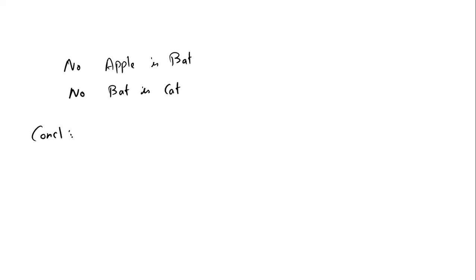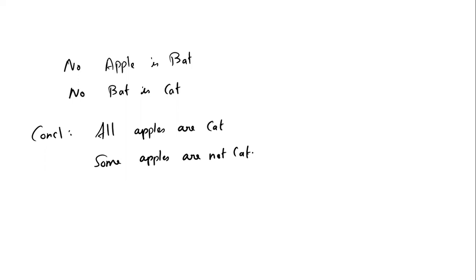Second example: no apple is bad. No bad is bad. No apples are bad. Conclusion: all apples are bad. Some apples are bad. Rule apply: no plus no rule is not the same. Number 2 is either-one and neither-one.